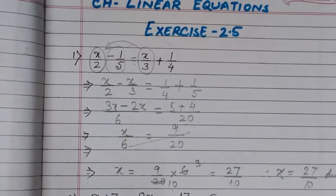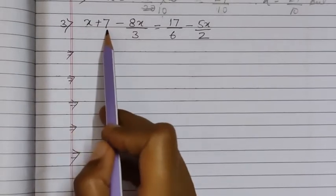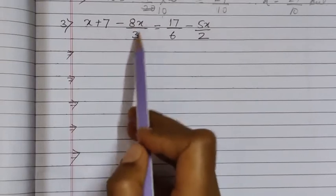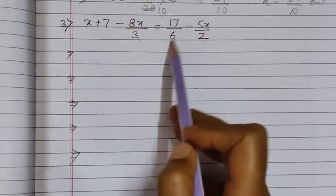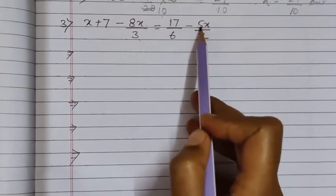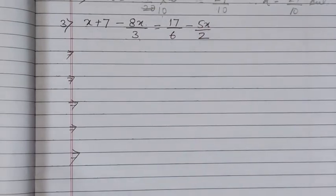Next I have taken question number 3. In question number 3, we have x plus 7 minus 8x by 3 equal to 17 by 6 minus 5x by 2. Here also, first we will move all the variable terms on one side and all the constant terms on the other side.